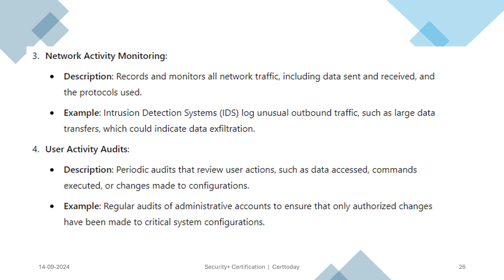Another example is network activity monitoring, which records and monitors all network traffic, including data sent and received and the protocols used. For example, intrusion detection systems log unusual outbound traffic, such as large data transfers, which could indicate data exfiltration. Fourth, user activity audits are periodic audits that review user actions such as data accessed, commands executed, or changes made to configurations. Regular audits of administrative accounts are important to ensure that only authorized changes have been made to critical system configurations.